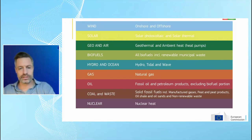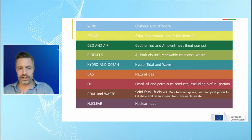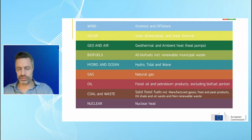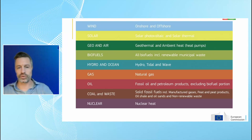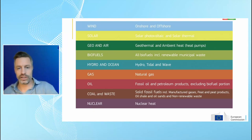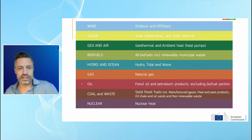To understand our tool better, it's good to be aware of the different energy sources. There are five renewable energy sources and four non-renewables. The one that is perhaps most new is geo and air — geothermal and ambient heat — a difficult term for local renewable heat taken up by heat pumps, mostly air. What's next is a short demonstration video, so please enjoy the explanation of how our tool works.